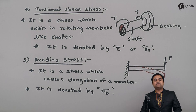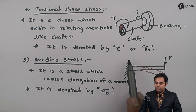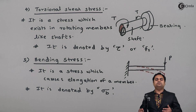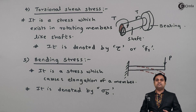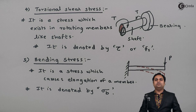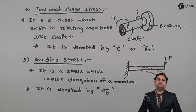Bending stress is mostly seen in beams fixed at one end and free at the other, or in simply supported beams which are supported at both ends. In this video we have seen what is meant by types of stresses — each stress has been seen in detail with its description.